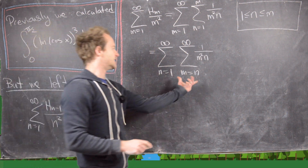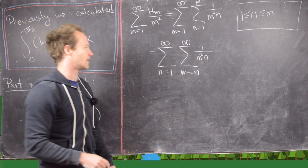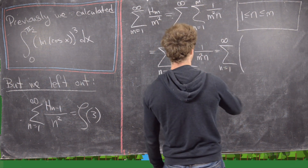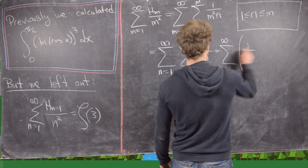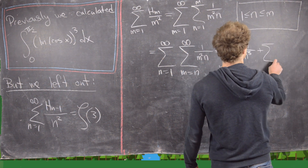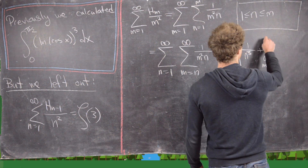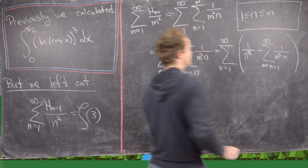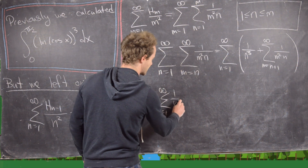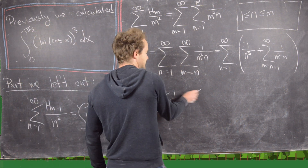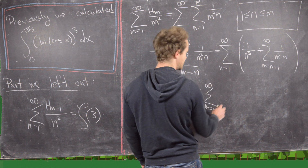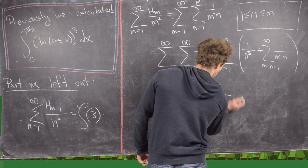Taking out the very first term of the inner sum — the case when m=n — gives the sum n=1 to infinity of 1/n³, plus the sum m=n+1 to infinity of 1/(m²·n). Splitting these, we get the sum n=1 to infinity of 1/n³, plus the double sum n=1 to infinity, m=n+1 to infinity, of 1/(m²·n).